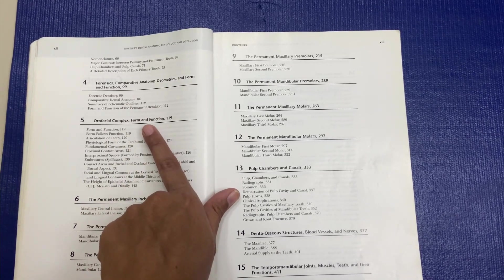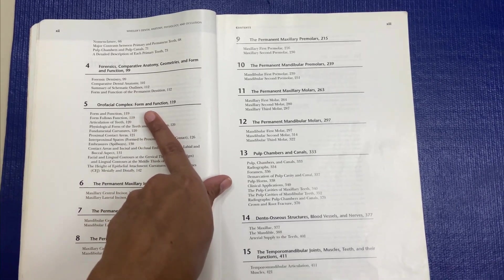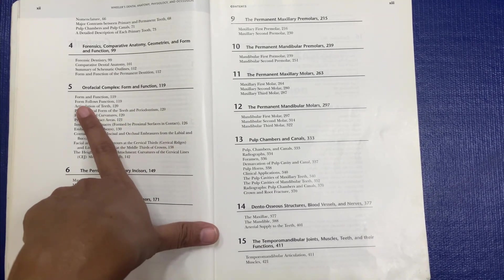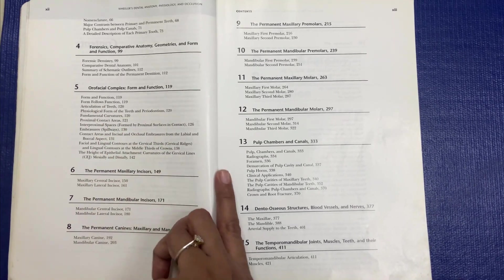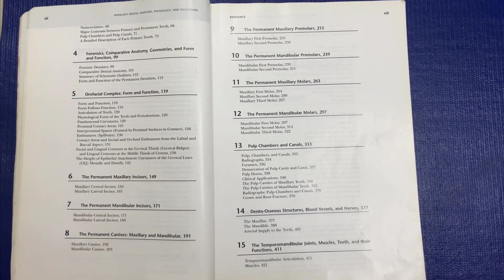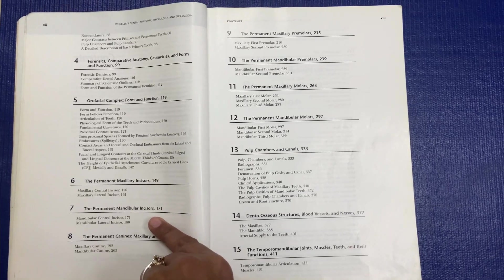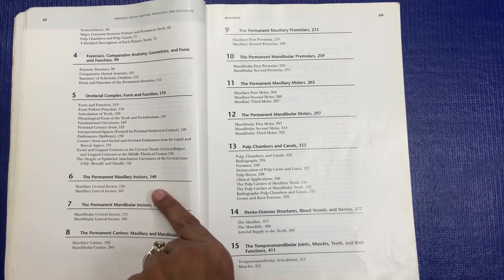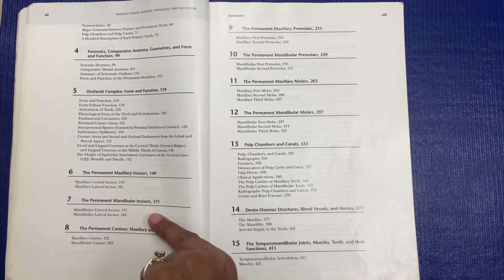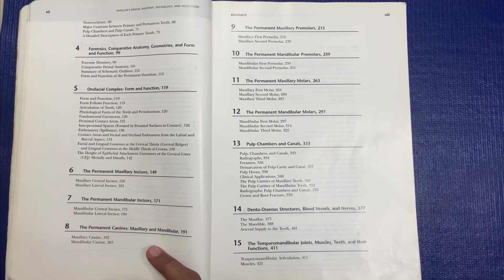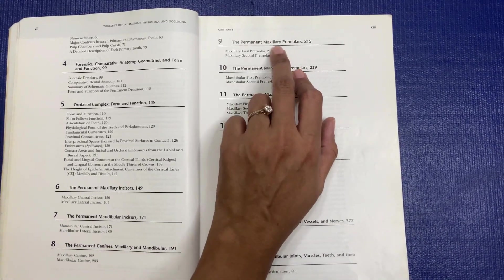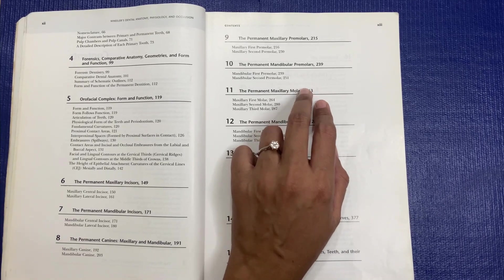Then forensic comparative anatomy, geometrics, and form and function. This will include the forensic dentistry, comparative dental anatomy. Then orofacial complex form and function. Then the very important individual tooth anatomy is given.